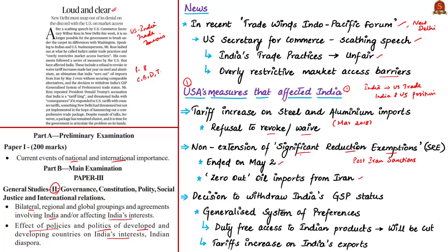Next is the decision of USA to withdraw the GSP status given to India. GSP stands for Generalized System of Preferences. Under this program, around 3,500 Indian products are given duty-free access to US markets, which largely benefited countries like India. USA is still considering withdrawing the GSP status given to India. If this GSP status is withdrawn, it will lead to imposition of tariffs on Indian exports, finally affecting India's trade and economy.